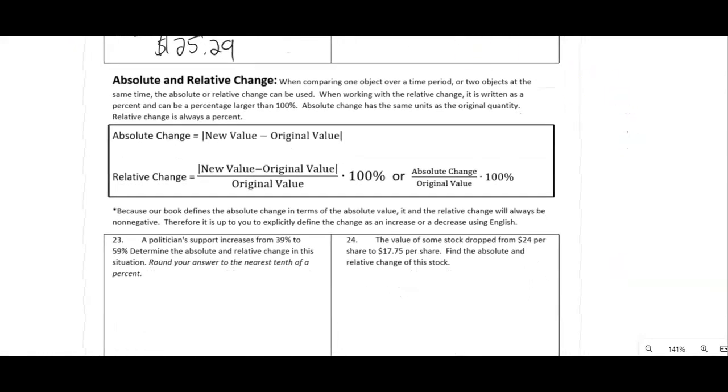All right, next type of percent usage is the absolute and relative change. This can either be comparing one object over a time period or two objects at the same time. Absolute and relative change can be used. The relative change, you write it as a percent. And you can, and often do, get percentages larger than 100%.